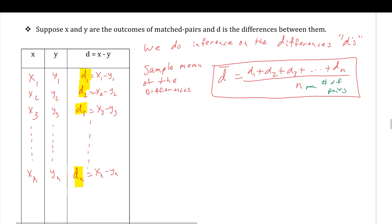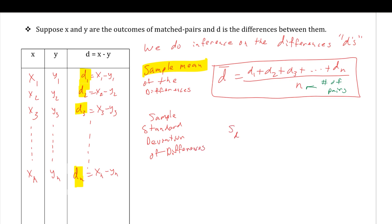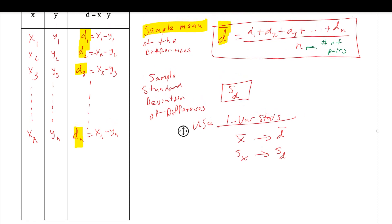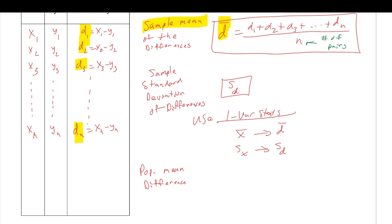If you can calculate the mean, we can also calculate the sample standard deviation of differences, and we call it s sub d. There's a formula for that; it's done the exact same way as before. When we run our differences list in our calculator, we're going to use one-variable stats. The outputs — x-bar and sx — since we're dealing with differences, x-bar is the same as d-bar and sx is the same as s sub d. There's always a theoretical true difference between x and y, and d-bar is always trying to target the population mean difference, which we call mu sub d.